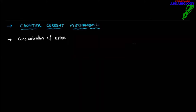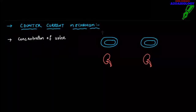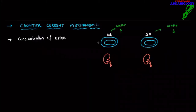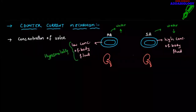Let us take two examples. I draw two circulatory systems — Mr. A (MA) and Sister A (SA). In the case of Mr. A, water is very high in the circulatory system, meaning there is low concentration of body fluid. In Sister A, water is low — less water means high concentration of body fluid, and since there is high concentration of body fluid the blood will flow very slow. So for MA the condition is hypo-osmolality, and for SA the condition is hyper-osmolality.